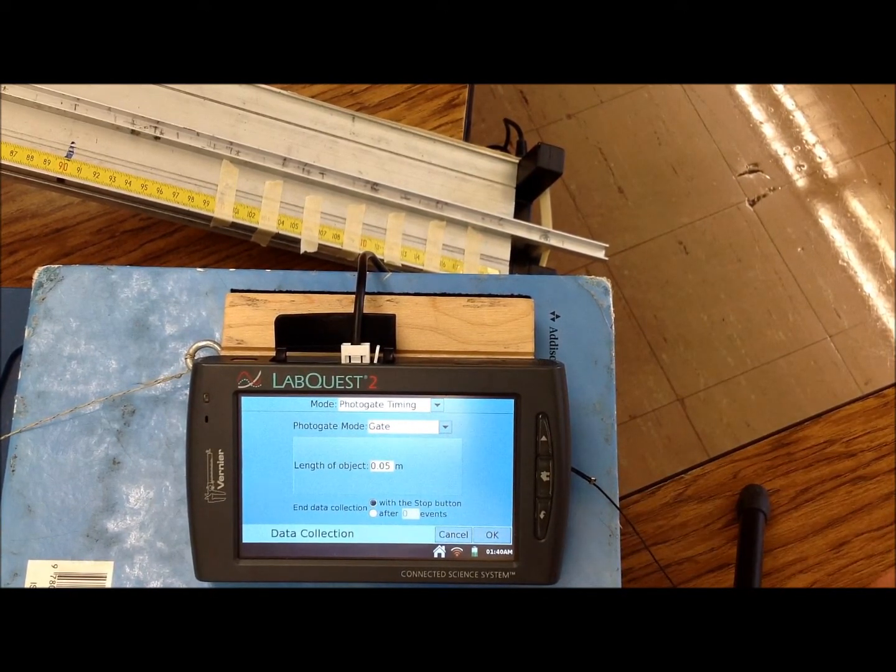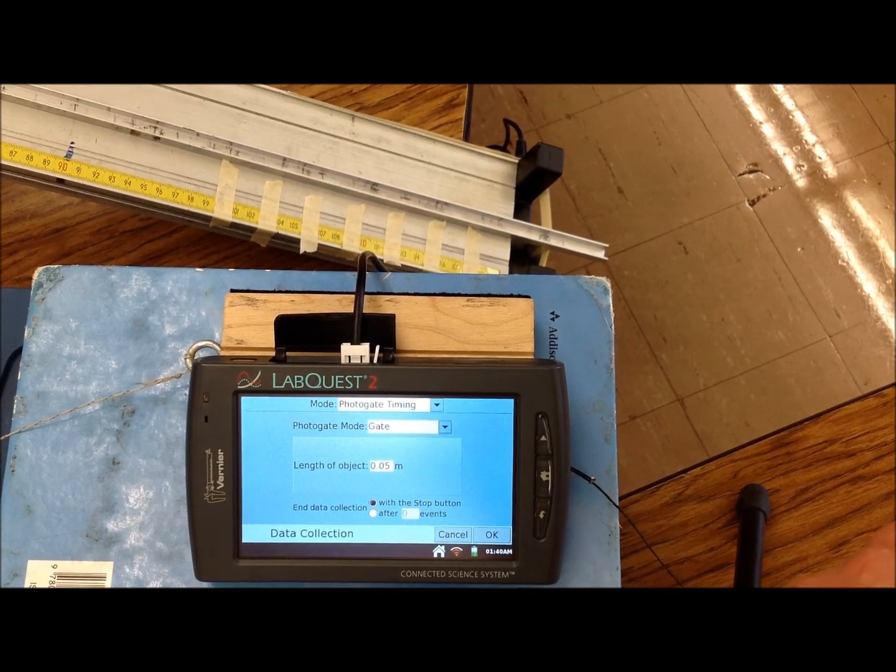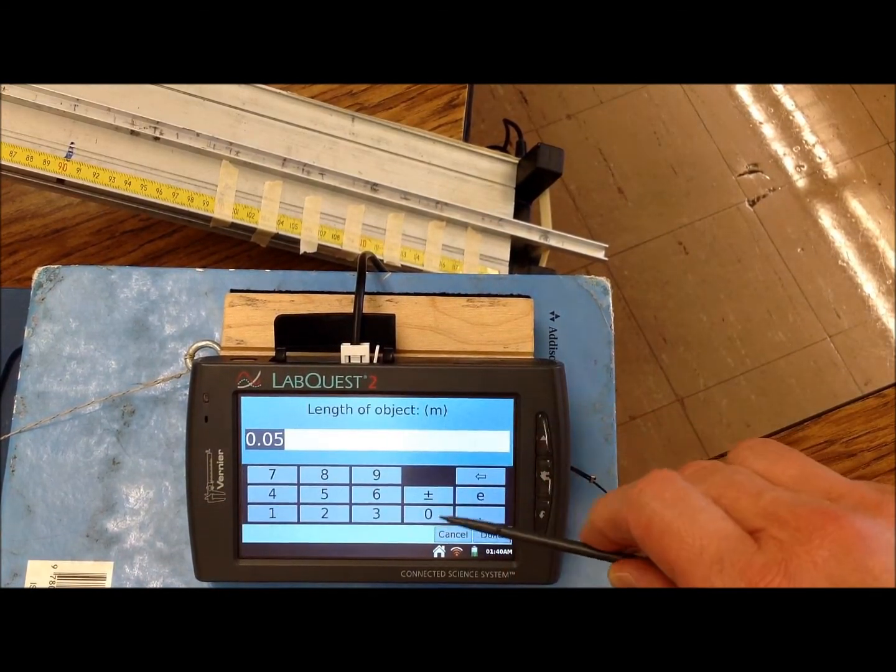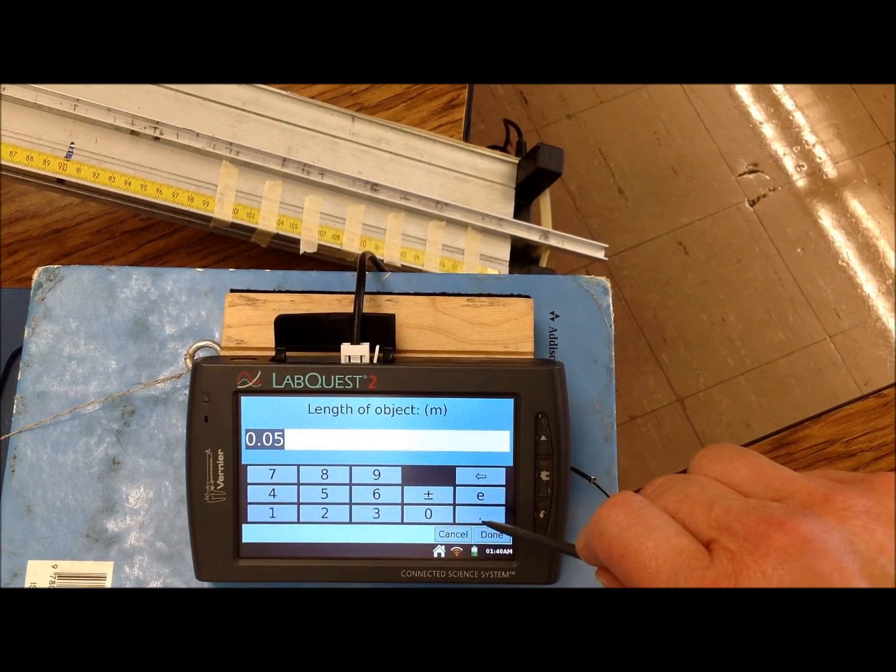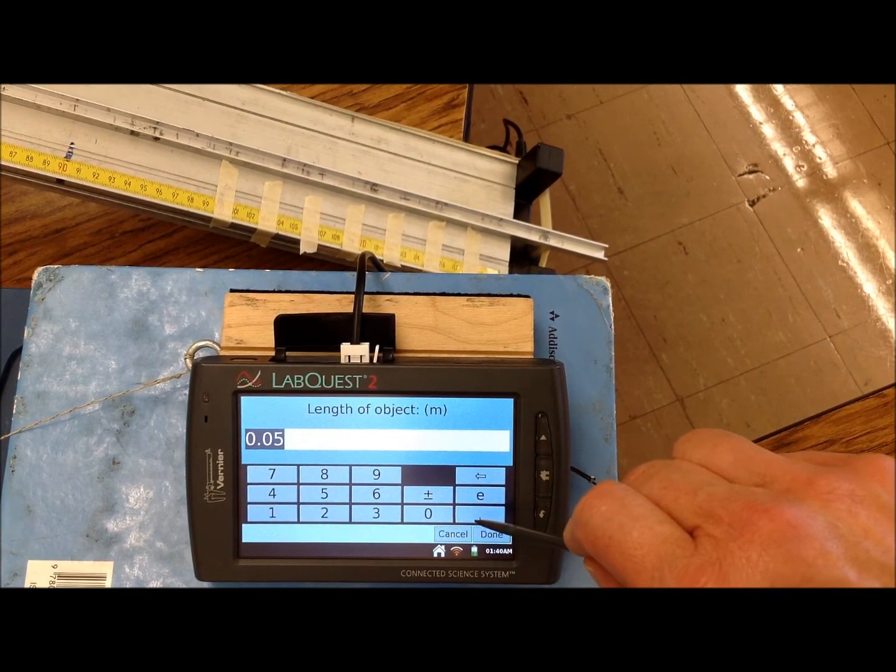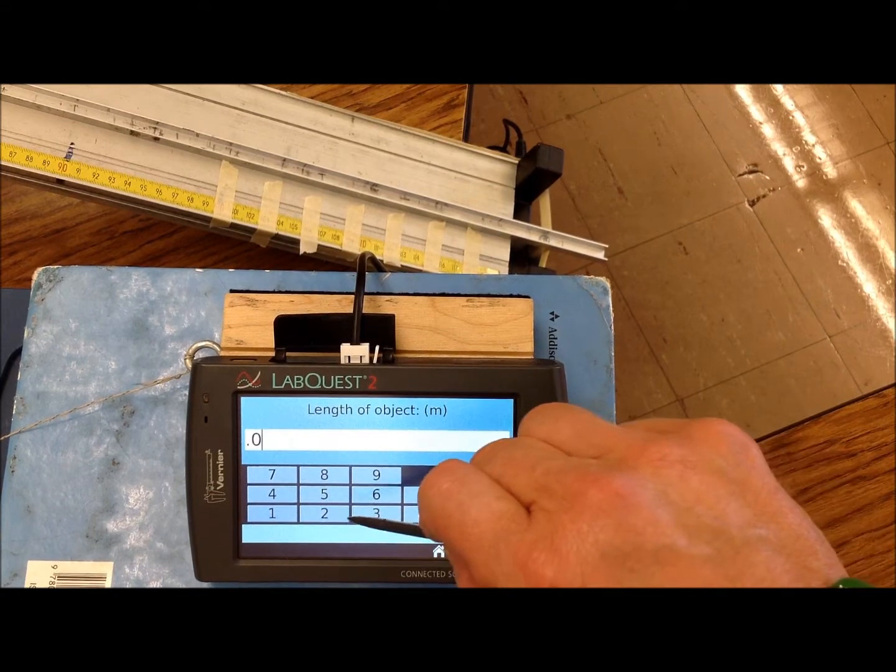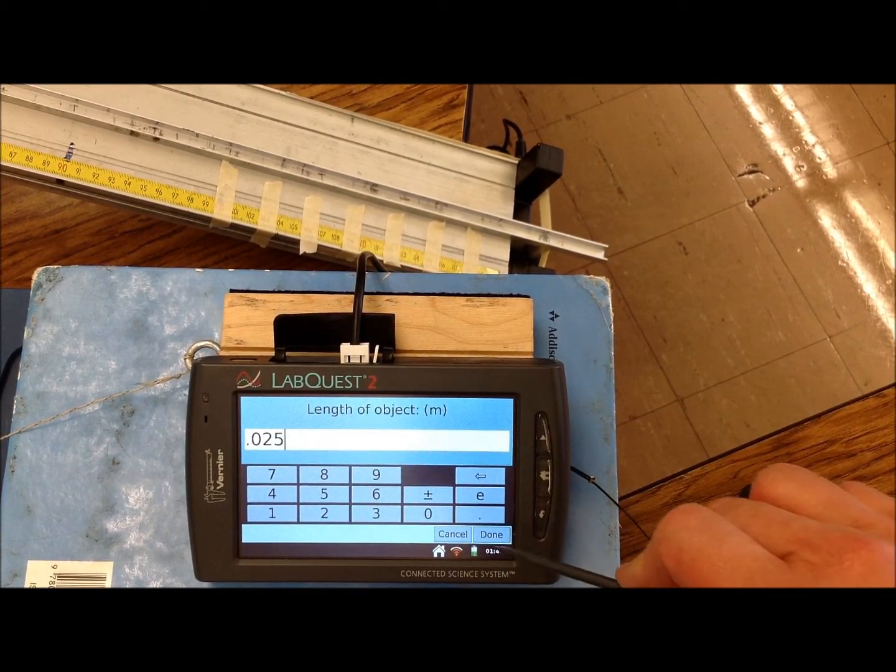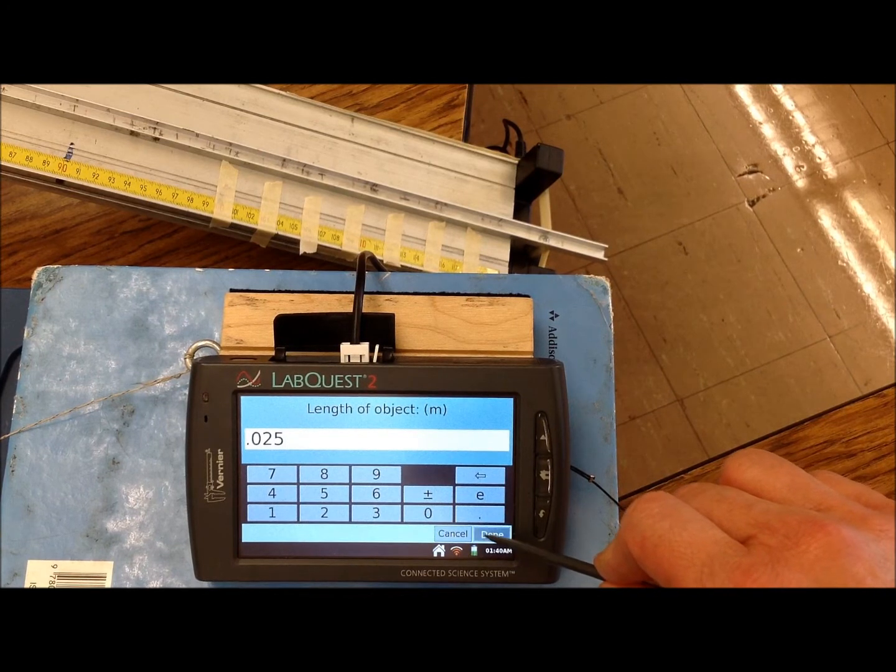The length of this object, this is a one-inch ball, which is 2.54 centimeters, so we need to change that. But it may already be changed, depending on what somebody else has already done in the lab, to .025. So that's the diameter of the ball that's going through the photogate. That's what it's going to use to figure the velocity.